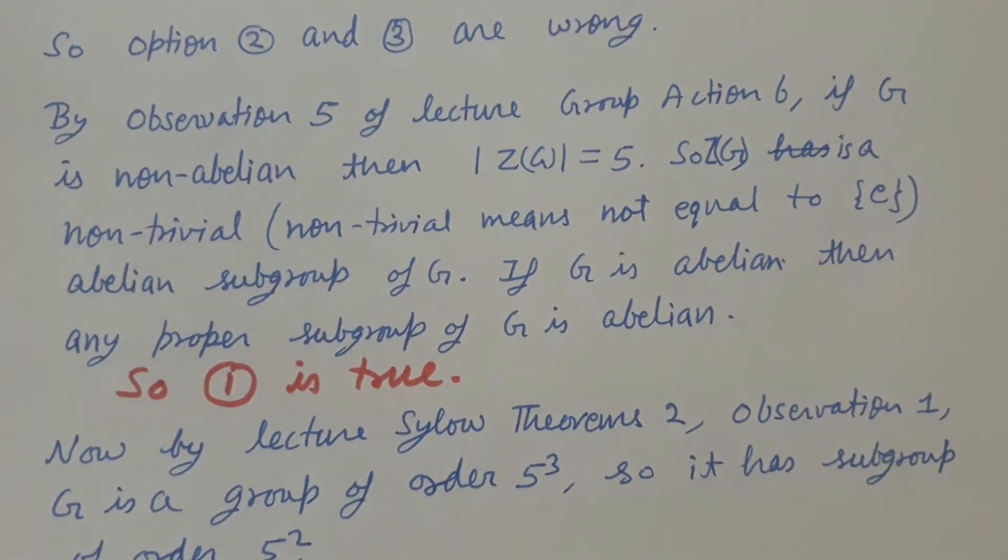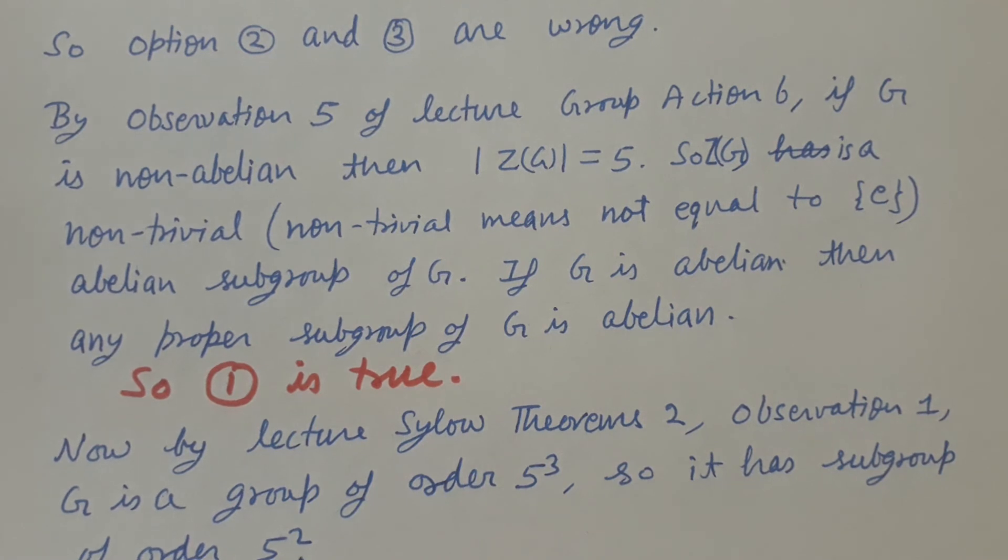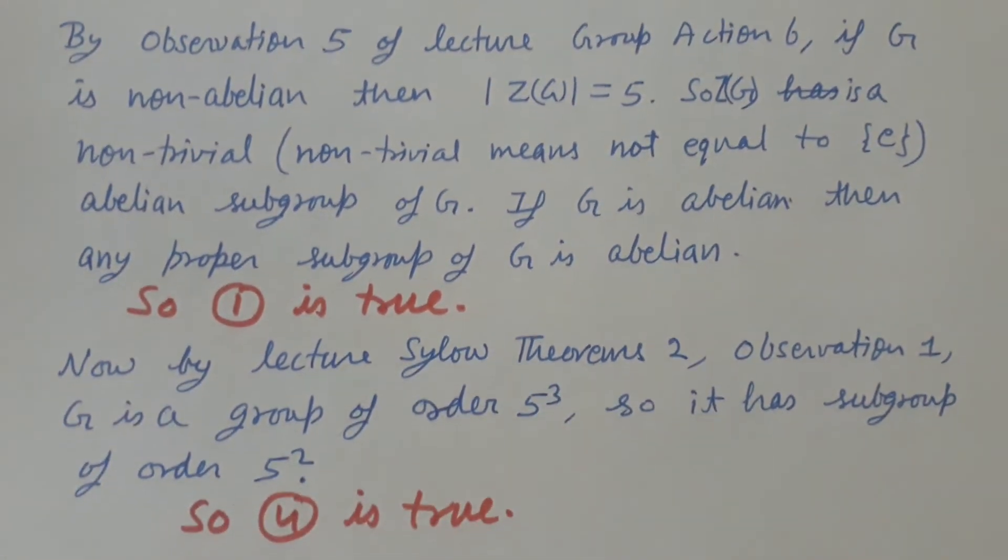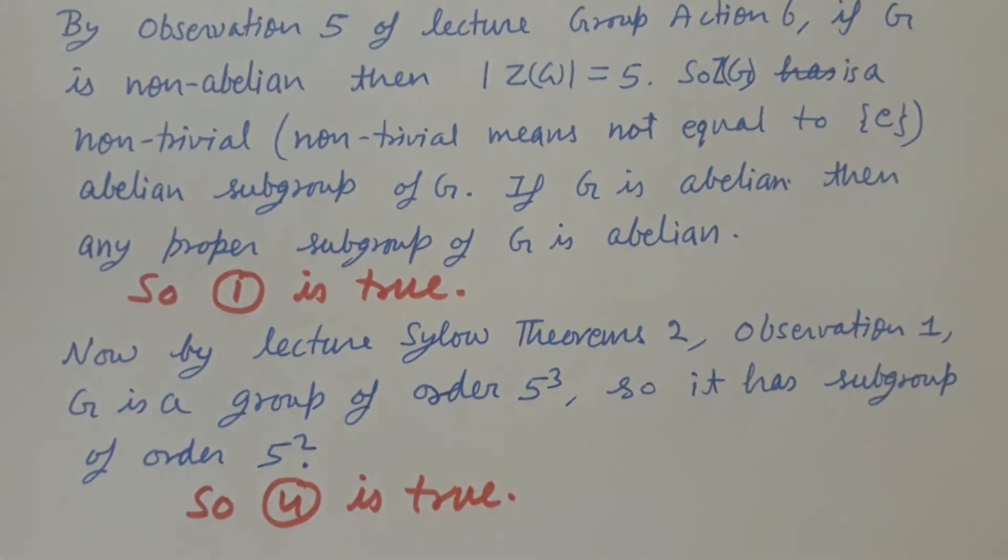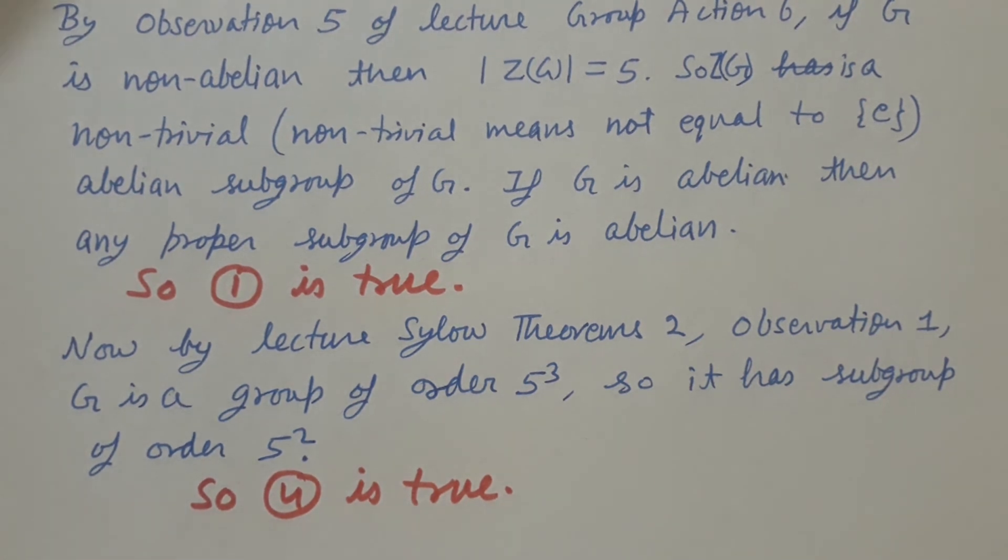Now by the lecture Sylow Theorems 2, observation 1, G is a group of order 5 cubed, so it has a subgroup of order 5 squared.